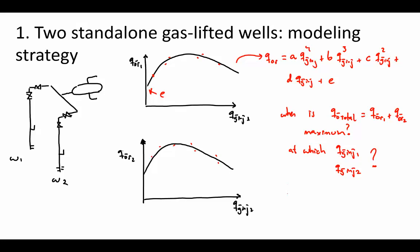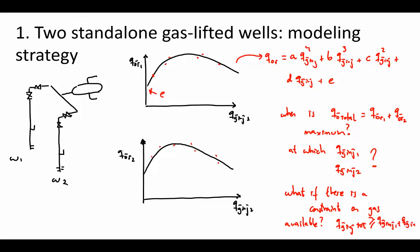The main task is to maximize the total oil production: q_oil_total = q_oil_well1(q_g1) + q_oil_well2(q_g2). There is also a constraint: the total available gas injection q_gas_total is limited, so q_g1 + q_g2 ≤ q_gas_total. We need to find the optimal allocation of gas injection between the two wells.